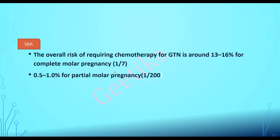What is the overall risk of requiring chemotherapy? In case of complete mole, it is 13 to 16% — the previous GTG stated 15%, so now they have given the range of 13 to 16%. For partial mole, it is 0.5 to 1%. These numbers are very important for exams.